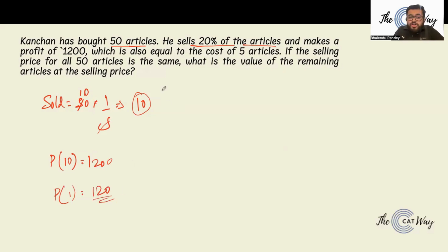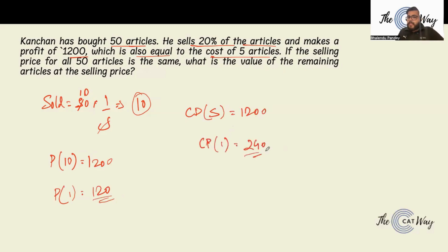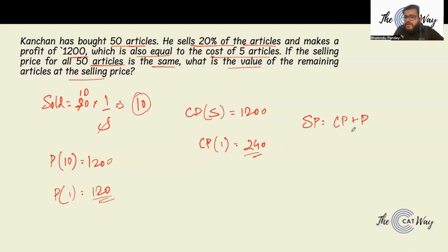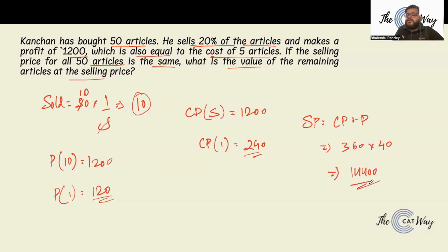It has also been given that 1200 is the cost of 5 articles, so the cost price of one article is 240 rupees. The selling price is cost price plus profit, which is 360 rupees. The question asks for the value of the remaining 40 articles at selling price. So the total value is 40 multiplied by 360, which is 14,400 rupees. This is the total value of all remaining articles at selling price.